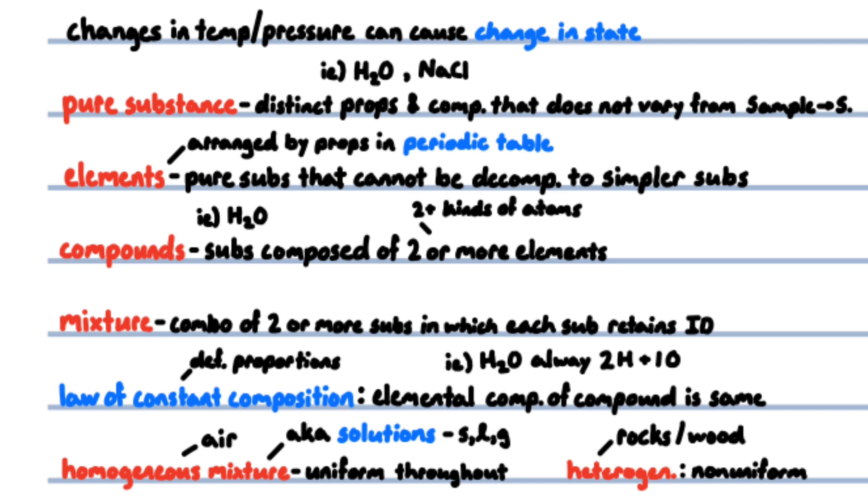The law of constant composition, also called the law of definite proportion, states that the elemental composition of a compound is always the same. For example, a compound of water is always two hydrogen atoms and one oxygen atom. A homogeneous mixture is one that is uniform throughout. Air is homogeneous. Homogeneous mixtures are sometimes called solutions. A solution can be gas, liquid, or solid.